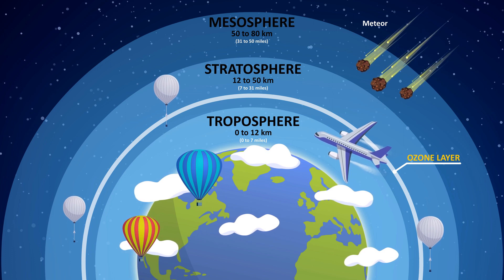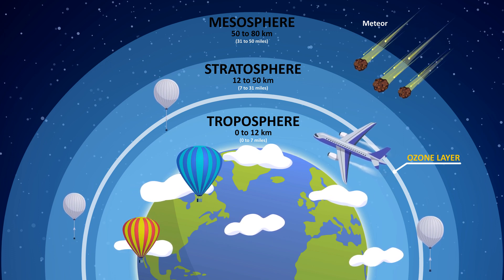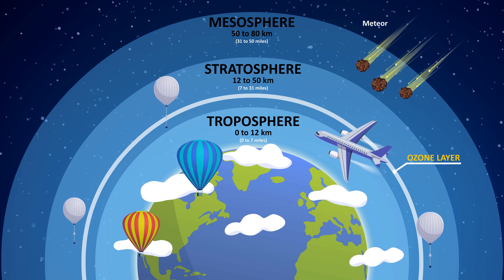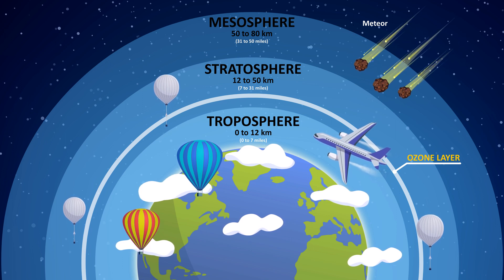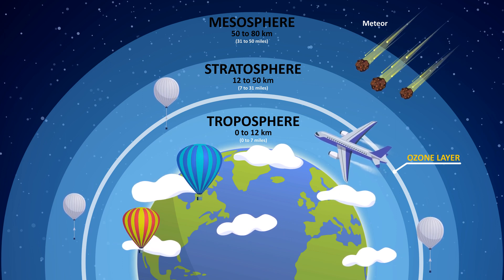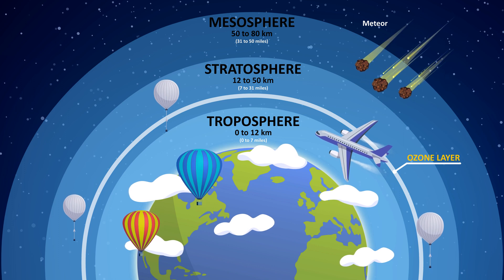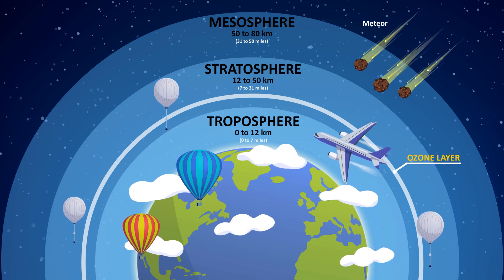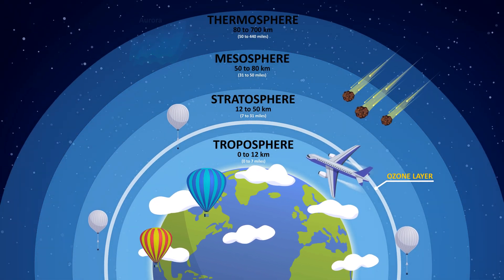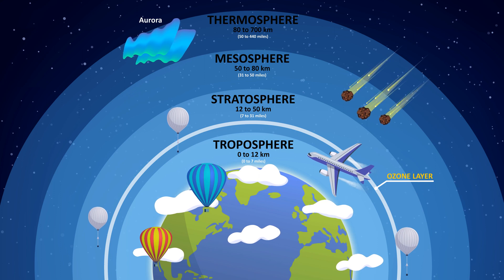Mesosphere: the layer where the air is especially thin and molecules are great distances apart is the mesosphere. Temperatures in the mesosphere reach a low of minus 90 degrees Celsius. Meteors burn up in this layer. The stratosphere and the mesosphere are known as the middle atmospheres.